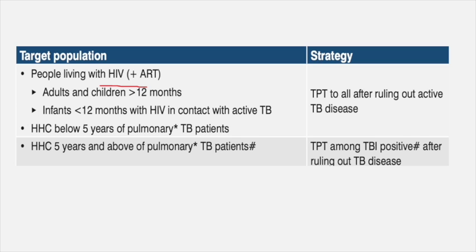For household contacts who do not have HIV — immunocompetent patients — but are less than 5 years of age, preventive therapy should be given to all after ruling out active TB. If a child is more than 5 years or is an adult exposed to a TB patient in the family, we can choose to give preventive therapy only to those who are positive for TB infection, but ruling out active disease is very essential.